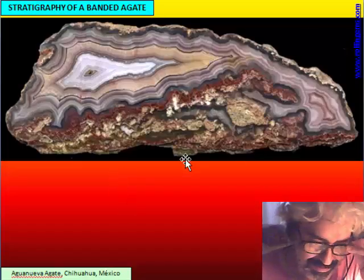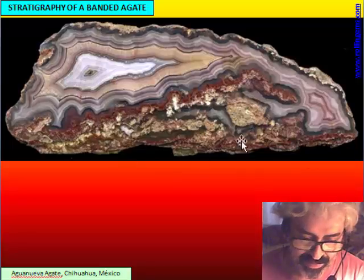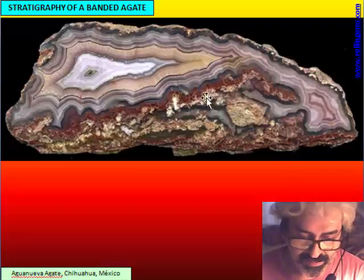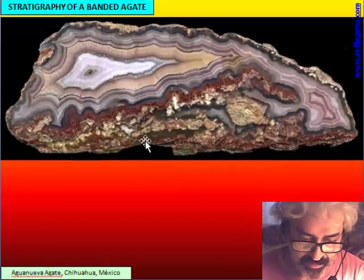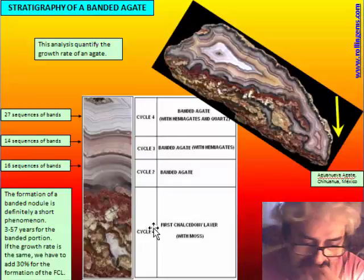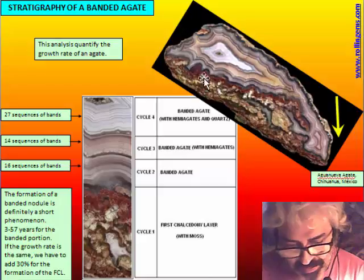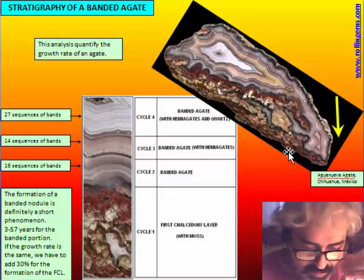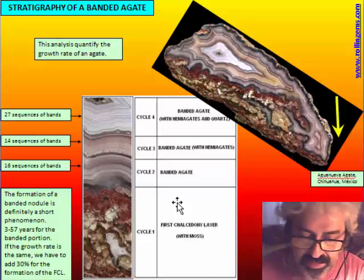This is another agate from the Laguna family — it is an Agua Nueva. We see that a part of the nodule is filled by moss and then there is an agate with nice color. Analyzing this, we discovered three cycles of three different colors: the purple, the salmon color, and the white. We made the stratigraphy of this nodule and found this is the correct orientation, and the moss has been moved, slumped down in this direction. We see that the first chalcedony layer can be a kind of cycle in the history of the agate.